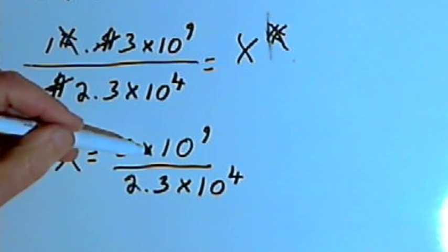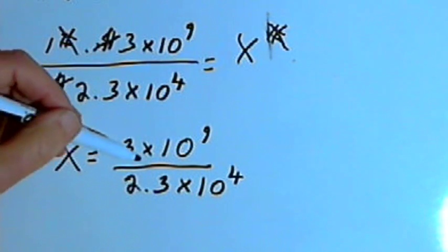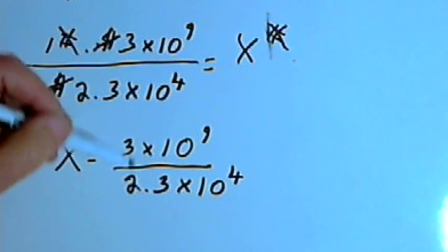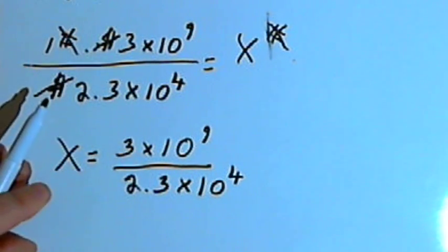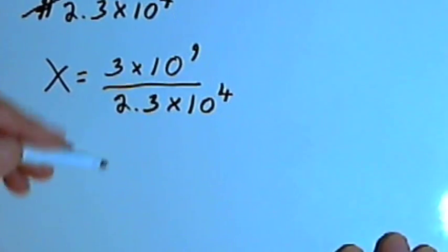And what I want to do is take this fraction and convert it into a single number in scientific notation, rather than a fraction. So that means I've got to take the 3 and divide it by 2.3. So let's do that down here.